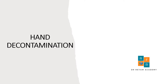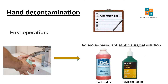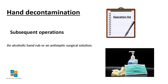The first measure we are talking about is hand decontamination. This term is used interchangeably with hand hygiene. It is the use of hand washing to reduce the number of bacteria on hands. The operating team should wash their hands prior to the first operation on the list using aqueous antiseptic surgical solutions such as aqueous povidone-iodine or aqueous chlorhexidine gluconate. But before subsequent operations, hands should be washed using alcohol rub.